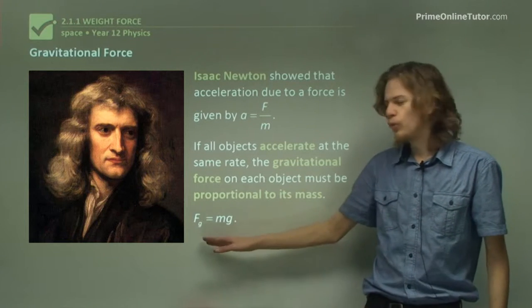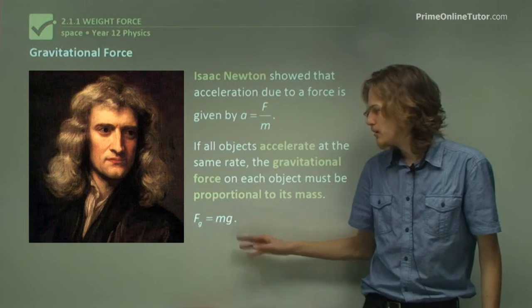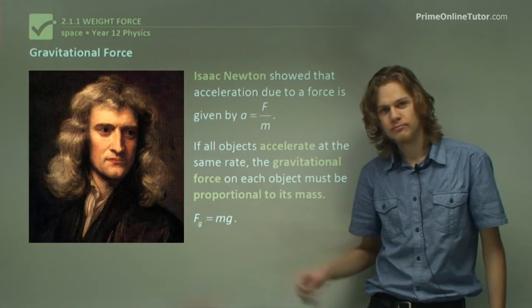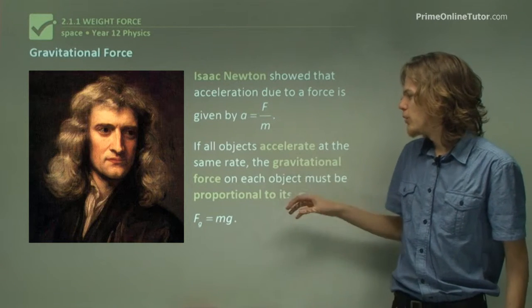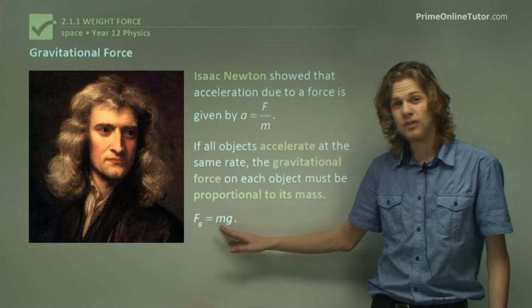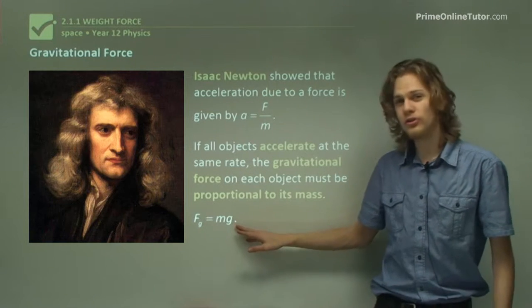So he said that the force of gravity equals the mass, m, times some constant. And so if we substitute that into this equation, we can see that this m will cancel out. And that the acceleration due to gravity will be this constant, g.